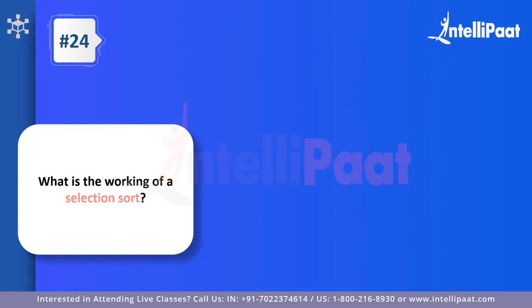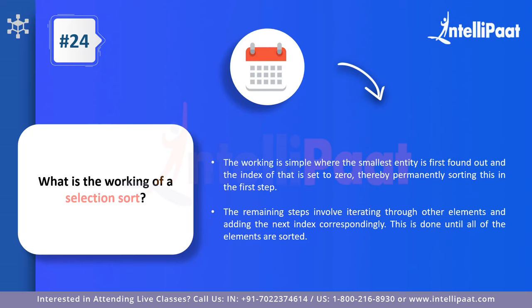Question twenty-four: what is the working of selection sort? Selection sort iterates through the array, selects the smallest element, and places it at index zero. Then it finds the next smallest and places it immediately to the right, and so on. With each full iteration, one element is placed directly into its final position. This continues until all elements are sorted. It's a straightforward sorting algorithm based on repeatedly finding the minimum and placing it correctly.